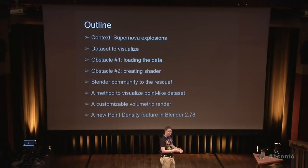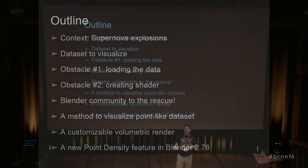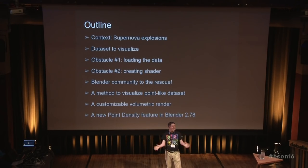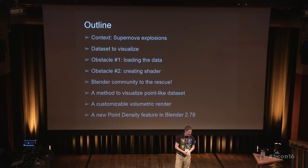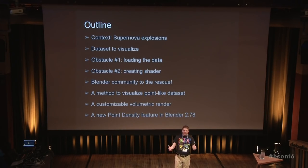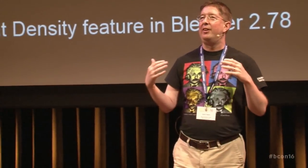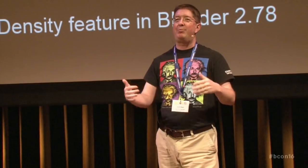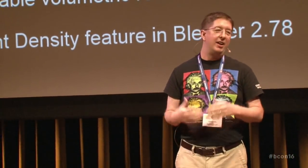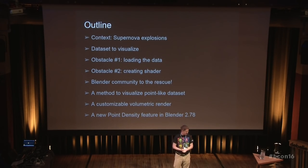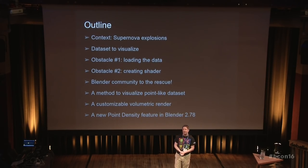The outline here is: first, I want to introduce you to supernova explosions — this is about week eight in my introductory course, so just a very short introduction. Then I'll talk about the data set I was given to visualize, some of the obstacles of getting that data into Blender and visualizing it. One of the fantastic things about Blender is the community, and this is where the community stepped up and actually improved Blender so that this project could move forward. I'll also outline the process I created to produce this visualization, show you the visualization, and then briefly recap the improvements made to the point density texture in 2.78.